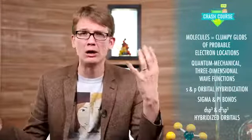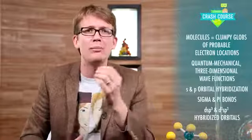Thanks for watching this episode of Crash Course Chemistry. If you were paying attention today, you learned that molecules are clumpy globs of probable electron locations determined by wave functions that are a bit more complicated than waves in a telephone cord. That water is an asymmetrical molecule because of oxygen's sp3 hybridized orbitals forcing the electrons into a tetrahedral structure. That s and p orbitals can also hybridize other ways as sp2 or sp, and how those hybridizations allow for double and triple bonds using both sigma and pi bond types. Finally, you learned that d orbitals can get involved too, allowing for hybridizations that form even cooler three-dimensional shapes.